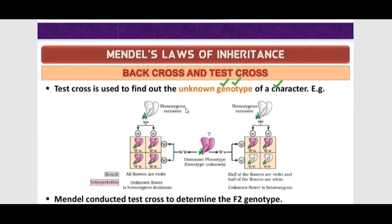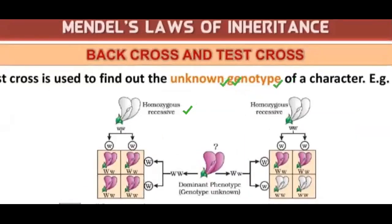For example, we cross the homozygous recessive. Whenever we cross the offspring, we will know what was the genotype of the offspring. Mendel conducted the test cross to determine the F2 phenotype.